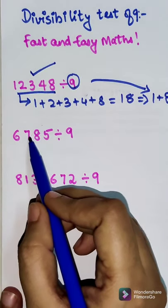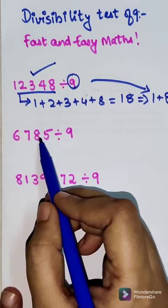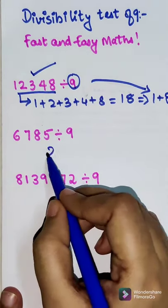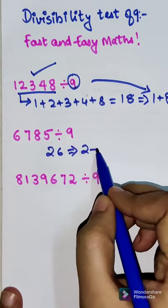So we have 6 plus 7 which is 13, 13 plus 8 is going to get you 21, 21 plus 5 is going to get you 26. So 26, the total will be 2 plus 6.